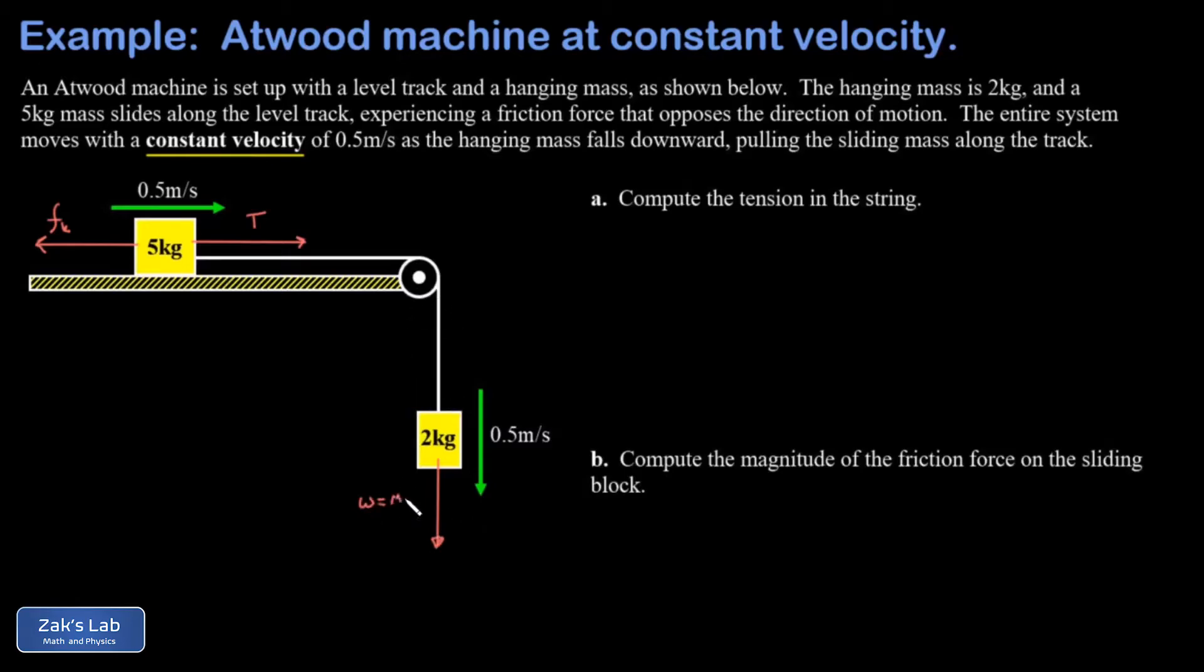The magnitude of that is given by mg. If we plug in two kilograms times 9.8 meters per second squared, we get 19.6 newtons for that downward force. The other force felt by the two kilogram block is the upward force exerted by that string—in other words, that's also the same tension.